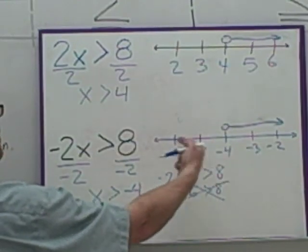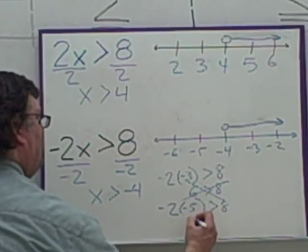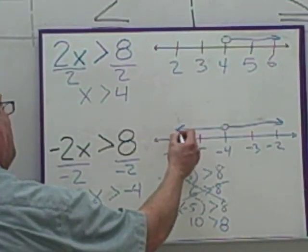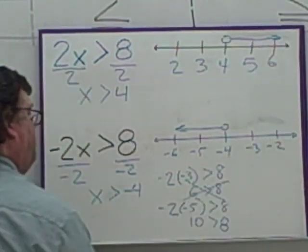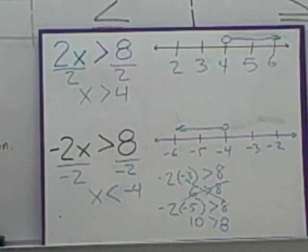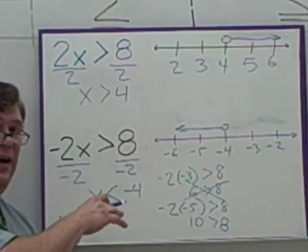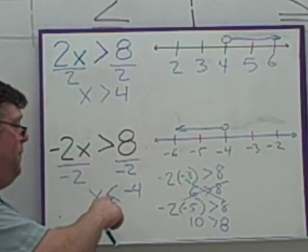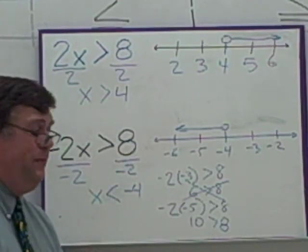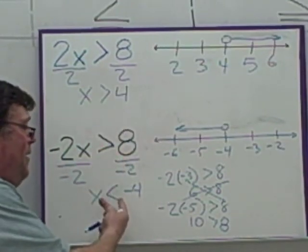Let's try values on the other side of negative four. Negative two times negative five is positive ten — is that greater than eight? Yes. So we actually want to go in this direction, not that one. Which means we don't have a greater than; we actually have a less than. As it turns out, whenever you divide or multiply by a negative in the process of solving, you have to flip your inequality symbol around. If it was less than, it becomes greater than; if it was greater than, it becomes less than.